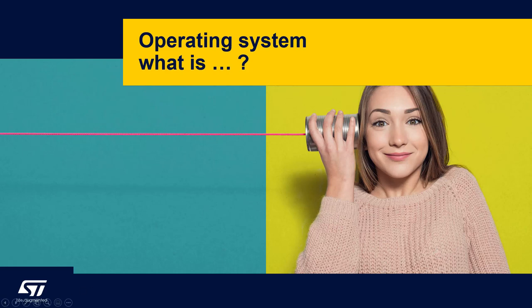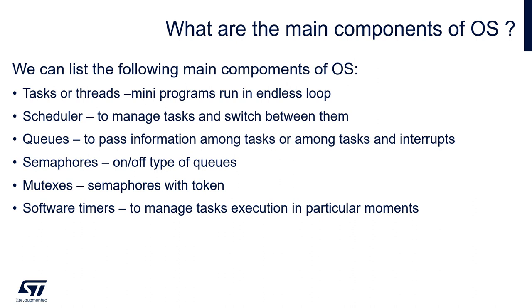Let's focus briefly on the main terms within operating systems. What are the main components of an operating system? The basic ones, the basic building blocks, are the tasks or threads. Those are mini programs run in an endless loop which perform some particular actions. Those are the main components of an operating system.